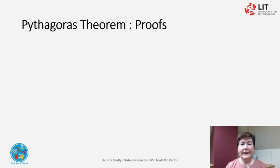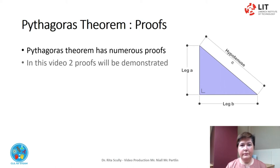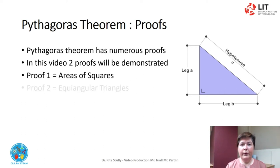The Pythagoras Theorem has numerous proofs. In this video, I will demonstrate two proofs. Proof 1 is the area of the squares, and Proof 2 is equiangular triangles.